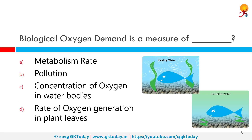Biological oxygen demand is a measure of what? It is a measure of pollution in a water body. Biochemical oxygen demand or BOD is a chemical procedure for determining the amount of dissolved oxygen needed by aerobic biological organisms in a body of water to break down organic material present in a given water sample at a certain temperature over a specific time period.